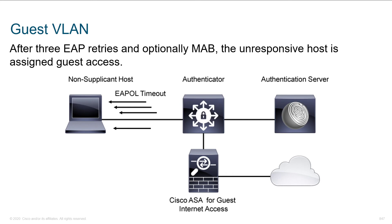We also have the concept of a guest VLAN. After three EAP retries from the switch with no response, unresponsive hosts are given guest access — because they don't understand EAP. In that guest VLAN, we might do central web authentication, pumping them to a portal. We're still letting them into the network, giving them DHCP, and we'll do a change of authorization once we know who they are. Guest VLAN is triggered when EAP times out, not when it fails due to bad credentials.